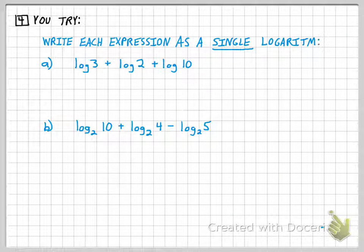Let's give you two U tries. Take this first expression here and see if you can write it as a single logarithm. I hope you realize that you have three logarithms added together. If I want to condense that, it's going to be the log of the product of all three of those. So it would be log of 60.